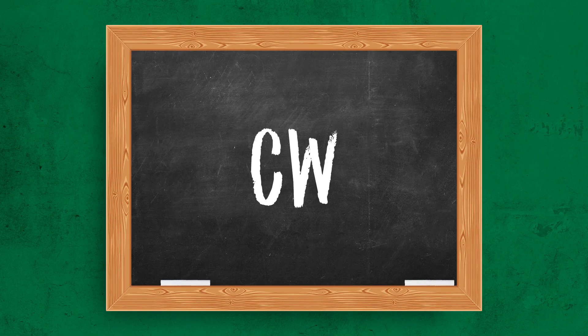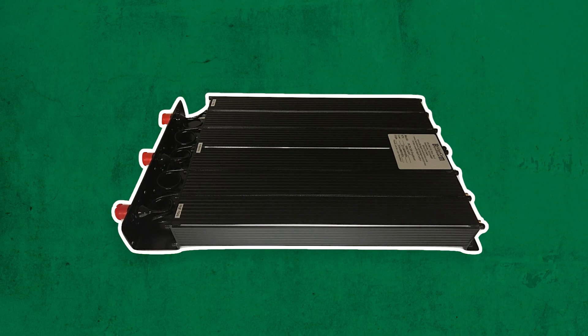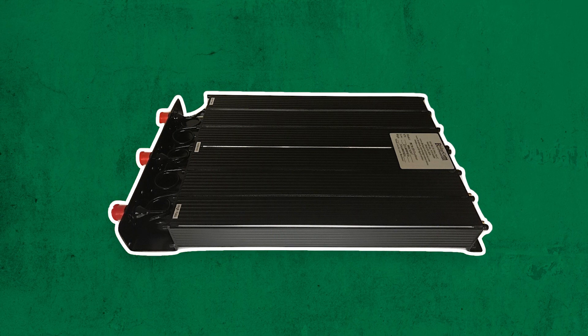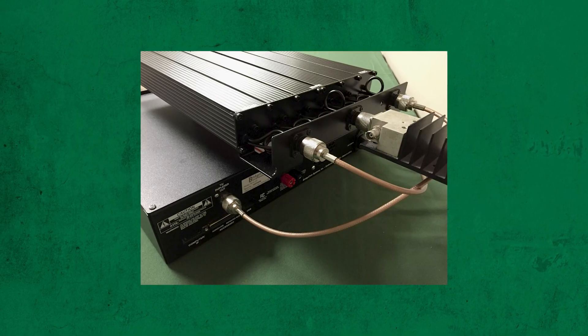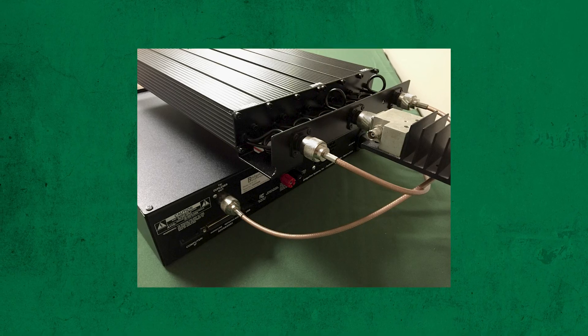CW is a radio communications method of on-off keying of a radio frequency, also known as international Morse code. Duplexer. A duplexer is a filter that filters out two very close together receive and transmit frequencies and allows you to use one antenna. This is typically used with a repeater system.